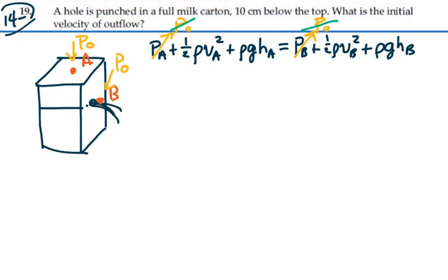We can also select our reference for our height. So if we select point B as being our zero height, then point A is a height h above that. Hence the height at A will be h and the height at point B will be zero. So that whole term will be zero.